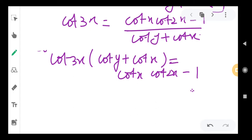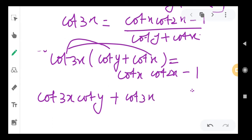Opening this bracket, cot 3x cot 2x plus cot 3x cot x equals cot x cot 2x minus 1.